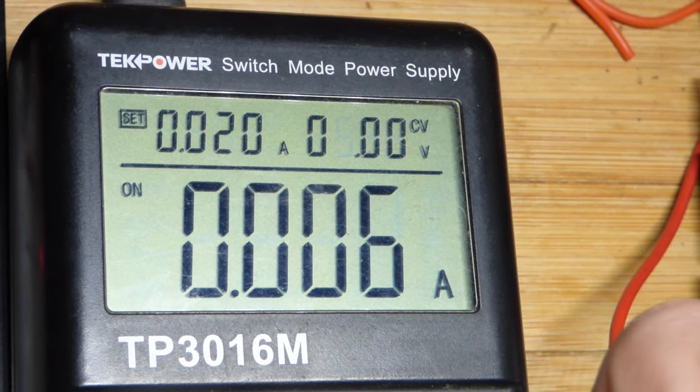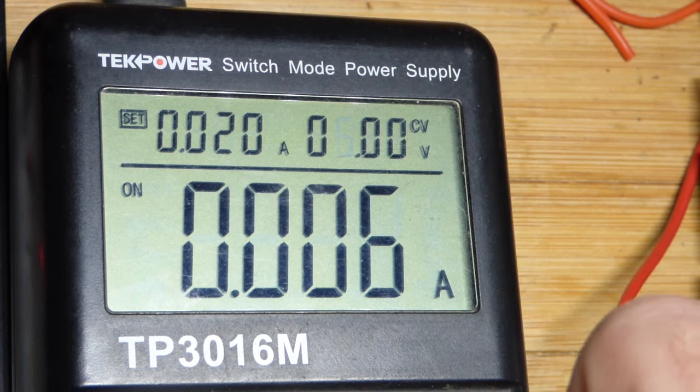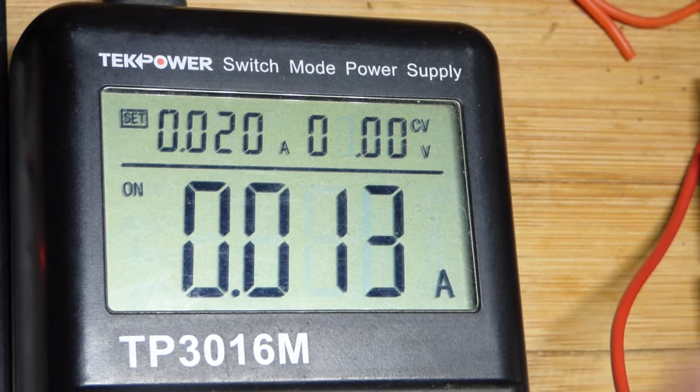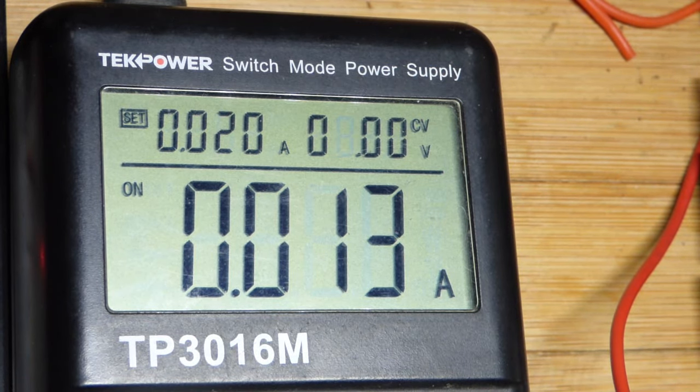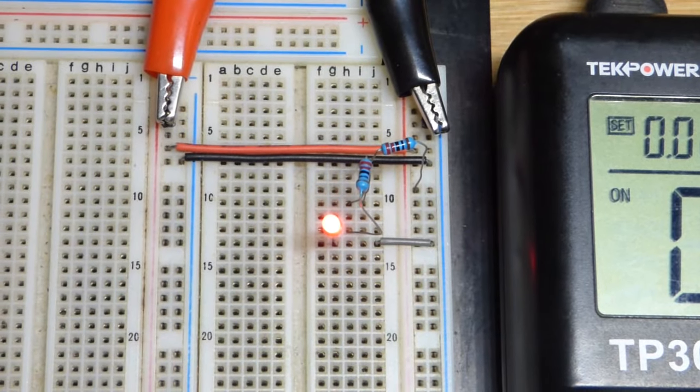Now there's three volts across the resistor, two volts across the LED when there was just one resistor. Now that we added a second one, we're going to need three more volts to get the same amount of current that we had before. And the LED is fairly bright there.